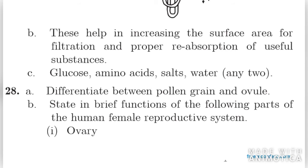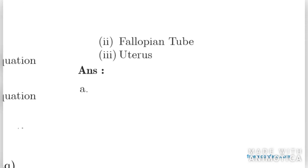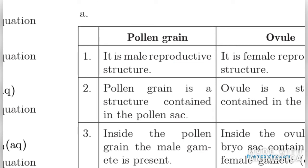Then state the brief function of the following parts. Ovary: it is present in the female part and produces ova or eggs. The ovary also secretes estrogen, which helps in the development of secondary sexual characters. Fallopian tube: it conveys the egg from the ovary to the uterus and provides the appropriate environment for its fertilization. Uterus: the embryo develops in the uterus in the female part.